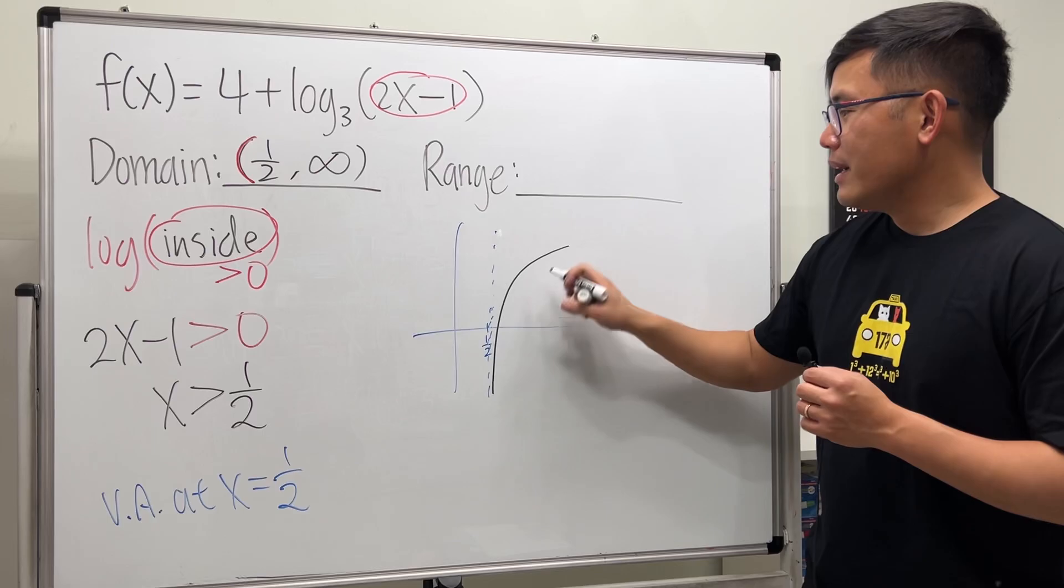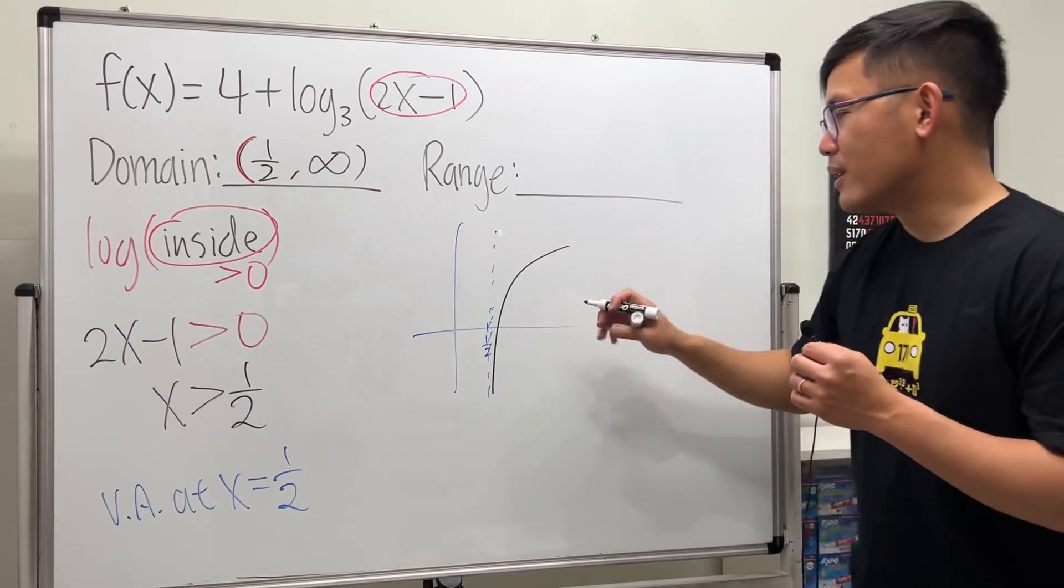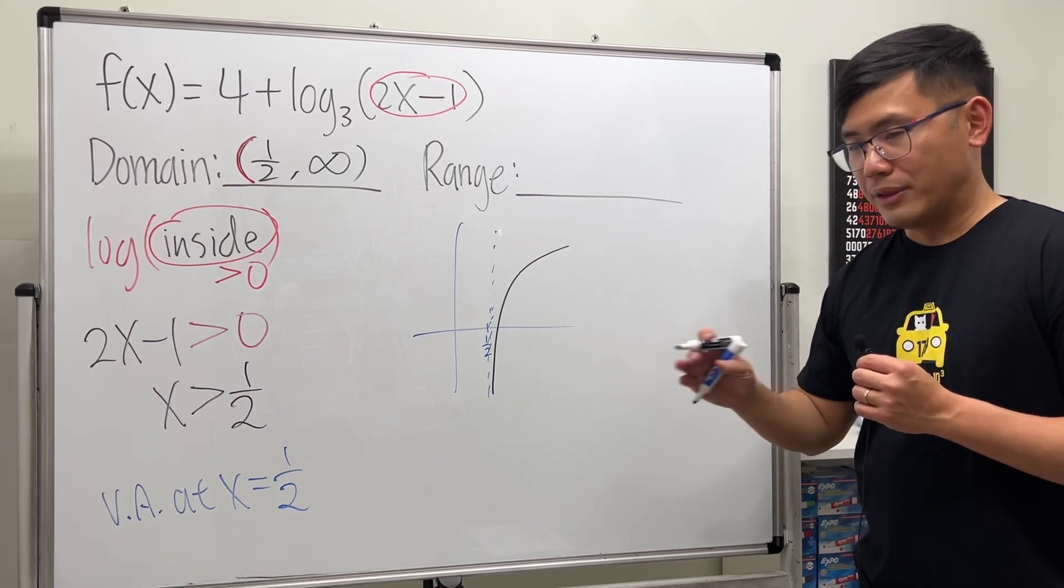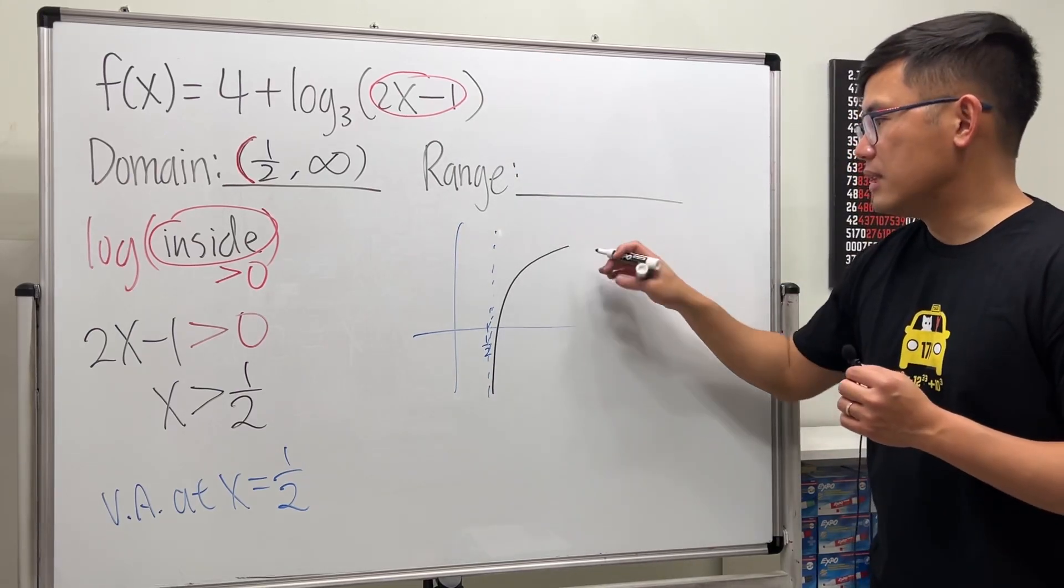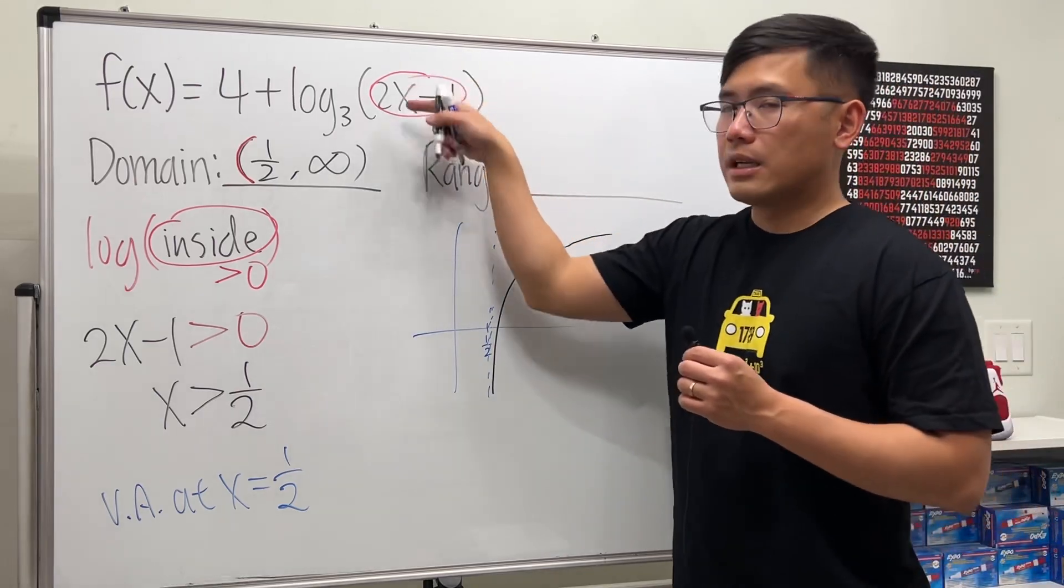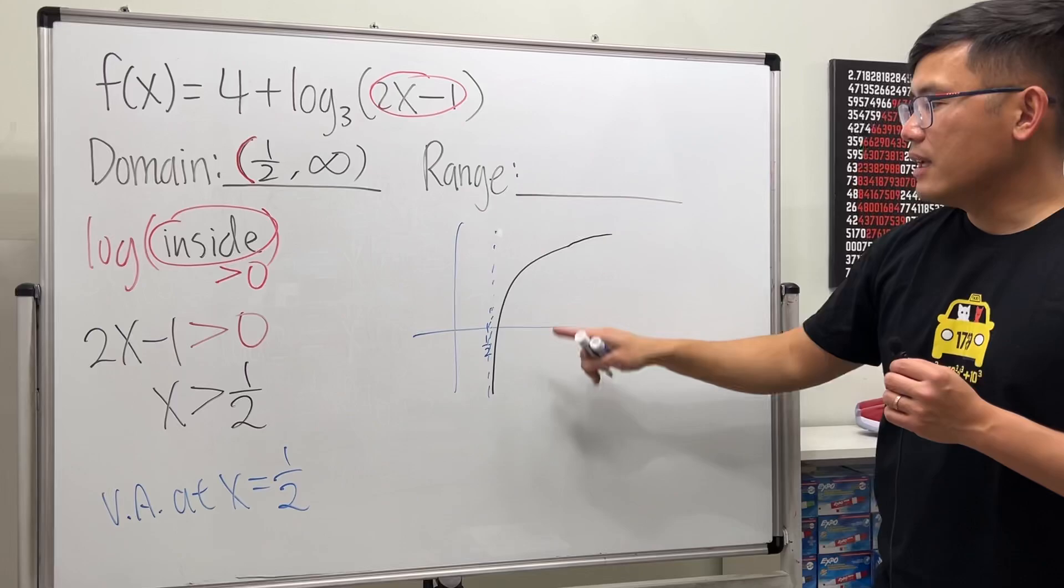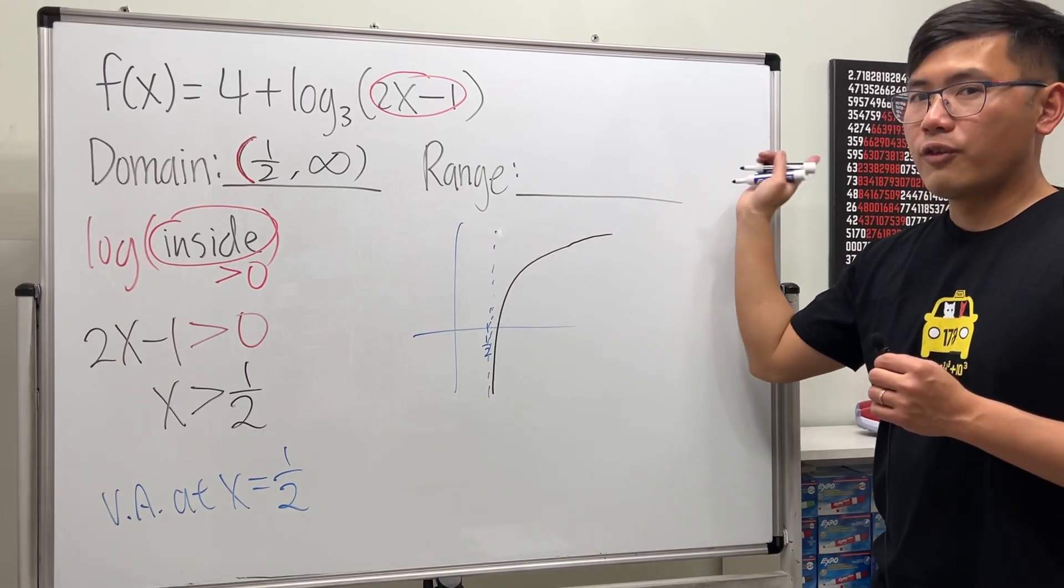Sometimes if you use a graphing calculator it might look like the graph has a horizontal asymptote, but no, for logarithms it does not have horizontal asymptotes unless the inside is much more crazier than just this. This right here actually keeps on going on forever to infinity.